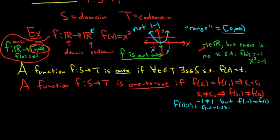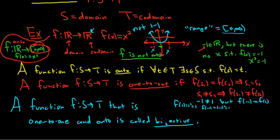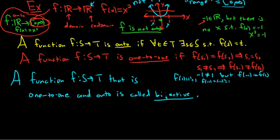If you have a function that's one-to-one and onto, it's called bijective. A function f from S to T that is one-to-one and onto is called bijective. Bijective functions are important because if you have a bijective function you can find the inverse function. The inverse function would be f inverse, and instead of going from S to T it goes from T to S. The inverse exists when the function is a bijection.